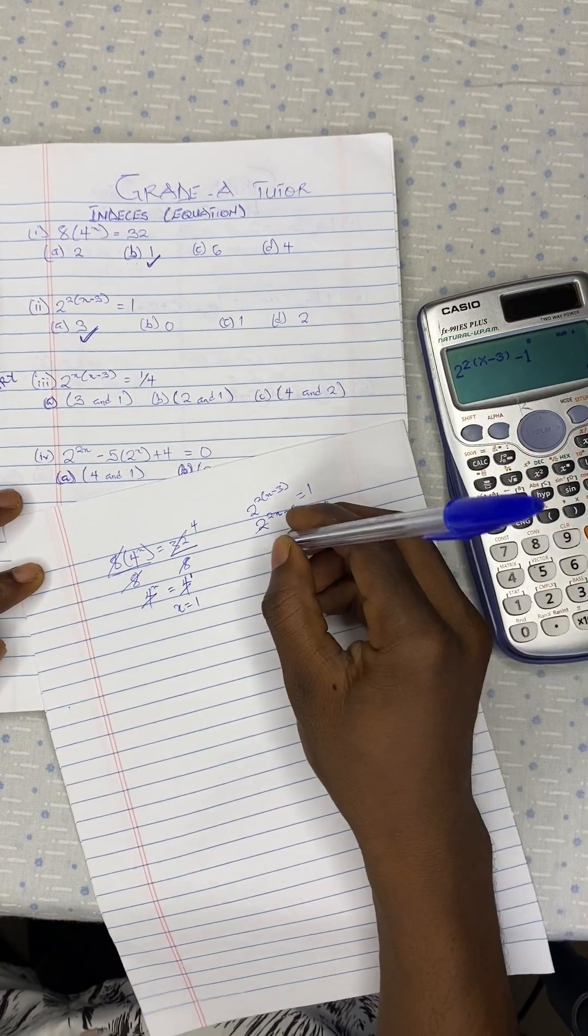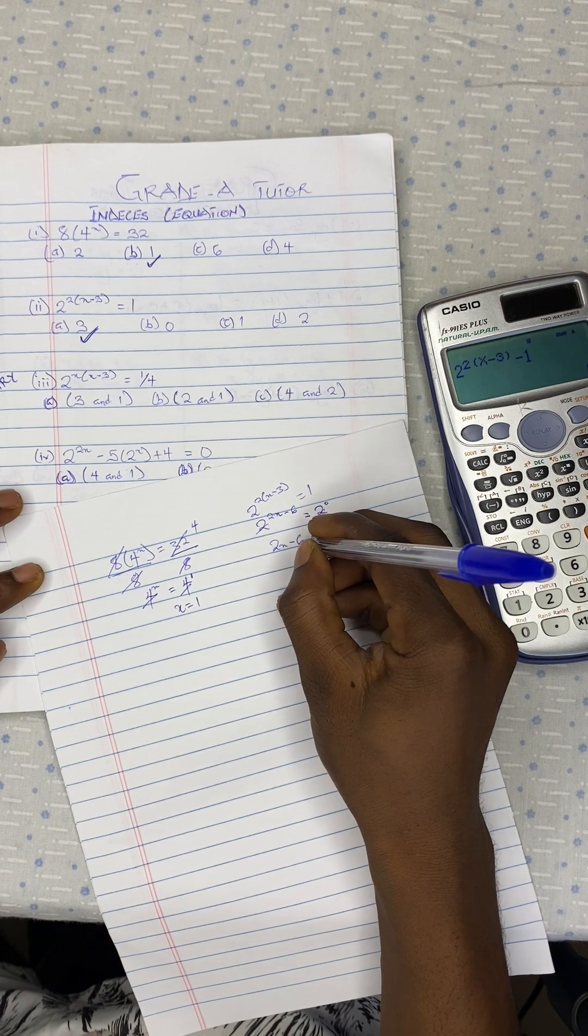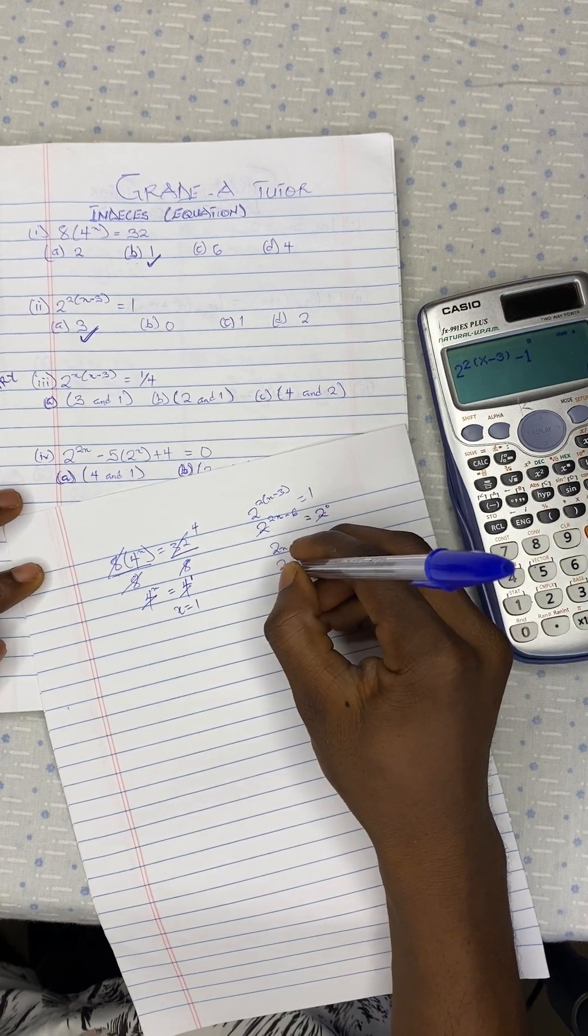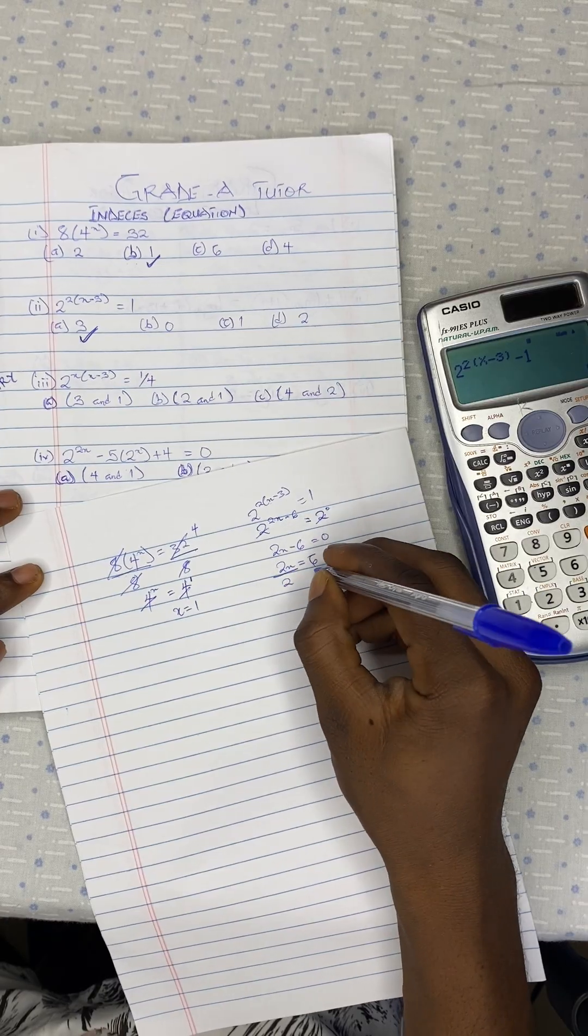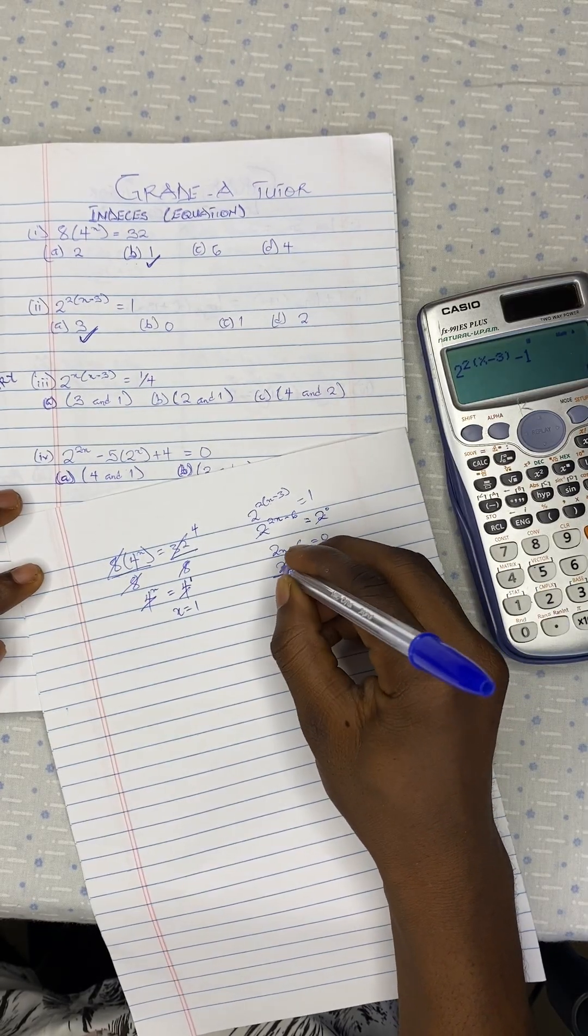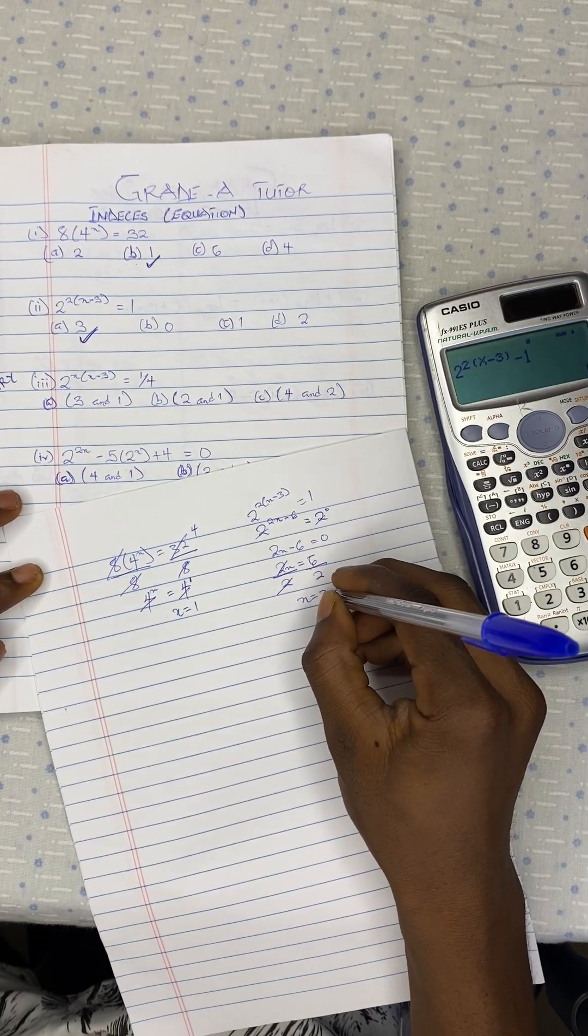So we have 2x minus 6 equal to 0. 2x is equal to 6. Divide by 2. So our x is equal to 3.